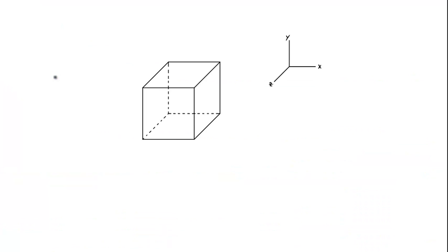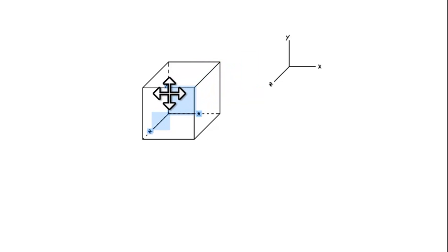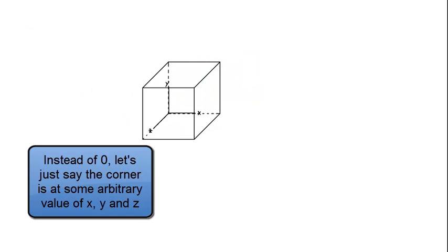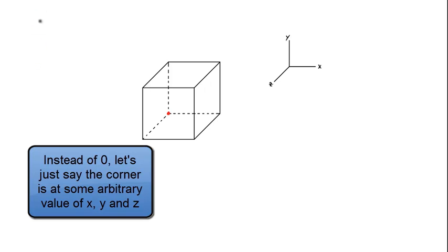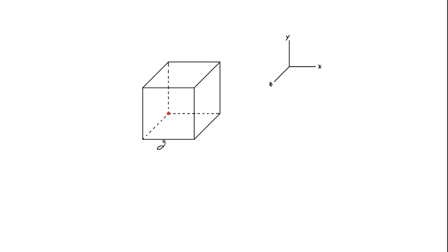Here's our fluid with streamlines generally flowing in some arbitrary direction, and here's our cube to give a sense of scale. Let's define a right-hand Cartesian coordinate axis: x, y, and z, placing the origin at one corner of the cube — marked with a red dot where x, y, and z all equal zero. The cube has three infinitesimal lengths associated with it: dx, dy, and dz.